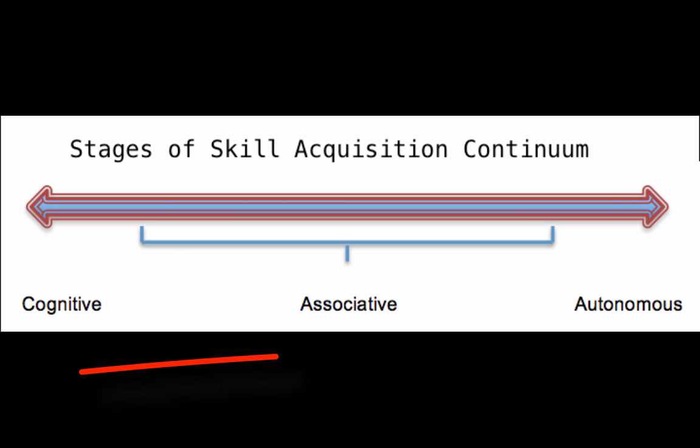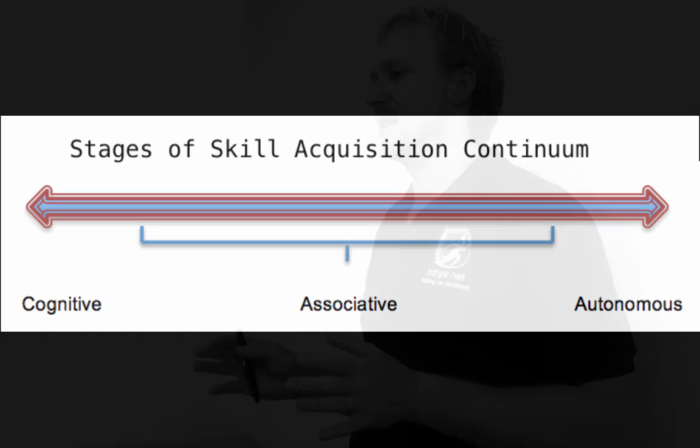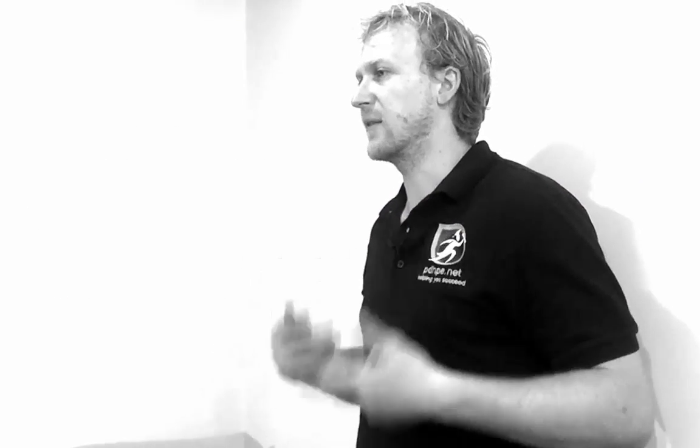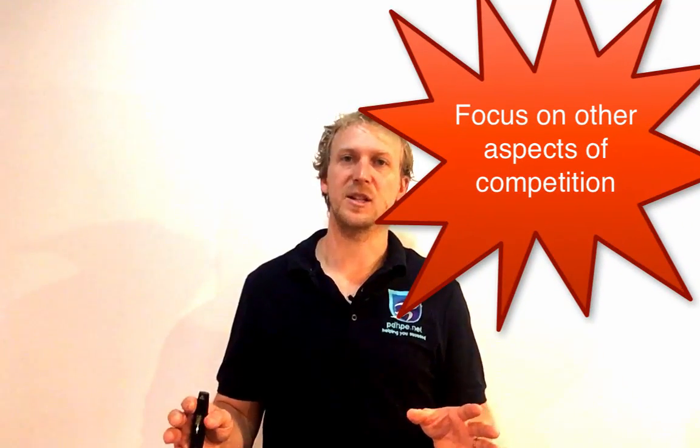As athletes move along the continuum through the associative stage and across to the autonomous stage, the athlete is no longer thinking about the skill at all — it becomes natural to them. They've developed neural pathways that enable them to perform the movement without thinking. They can now focus on other aspects of competition, such as dribbling the ball and deciding whether to pass, beat a defender, or find space.